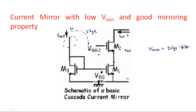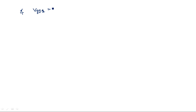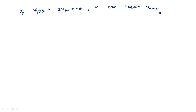Vmin equals 2VGS minus VTH, which can also be written as 2VON plus VTH, where VON is the ON voltage of the transistor. However, if we can obtain VGG2 equal to 2VON plus VTH, then Vmin can be reduced to 2VON. This is the important condition we should maintain. This can be achieved by introducing another branch with I_reference current.